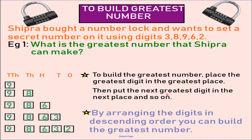We have 5 digits, so we will place 5 place values on top. The highest place here is the 10,000th place. The highest digit is 9, so we will place 9 at the highest place. The next highest digit is 8, so we will place it at the thousands place. The next digit is 6, placed at the hundreds place, and the next digit is 3 at the tens place, and the last digit is 2 at the ones place. We just arranged the digits in descending order — that is from big to small — and we got our greatest number: 98,632.